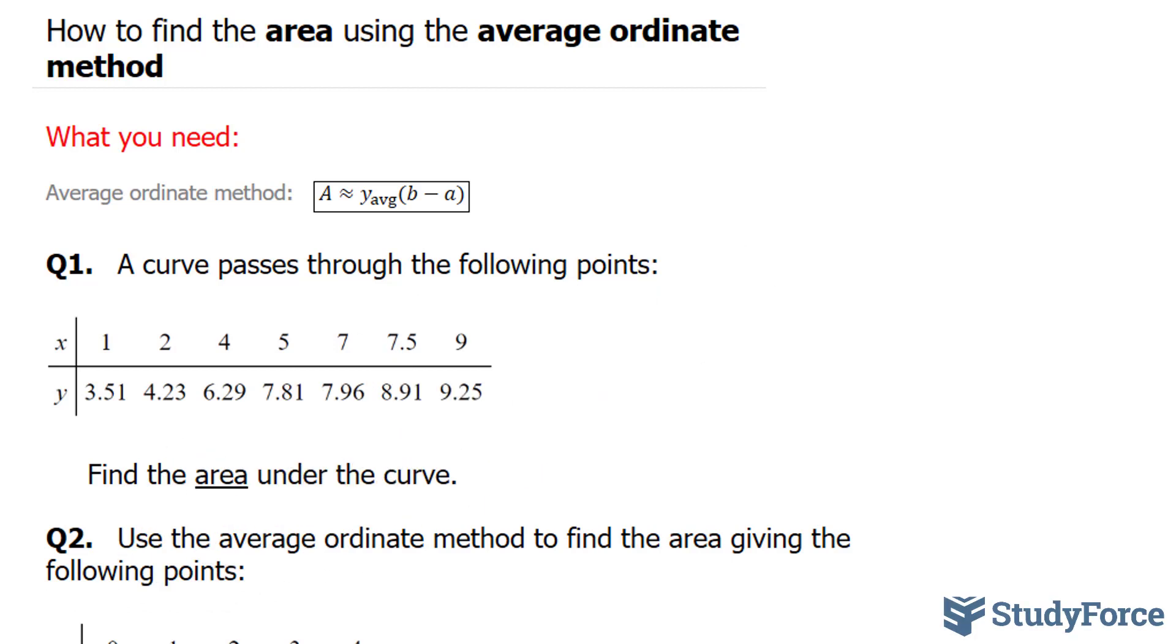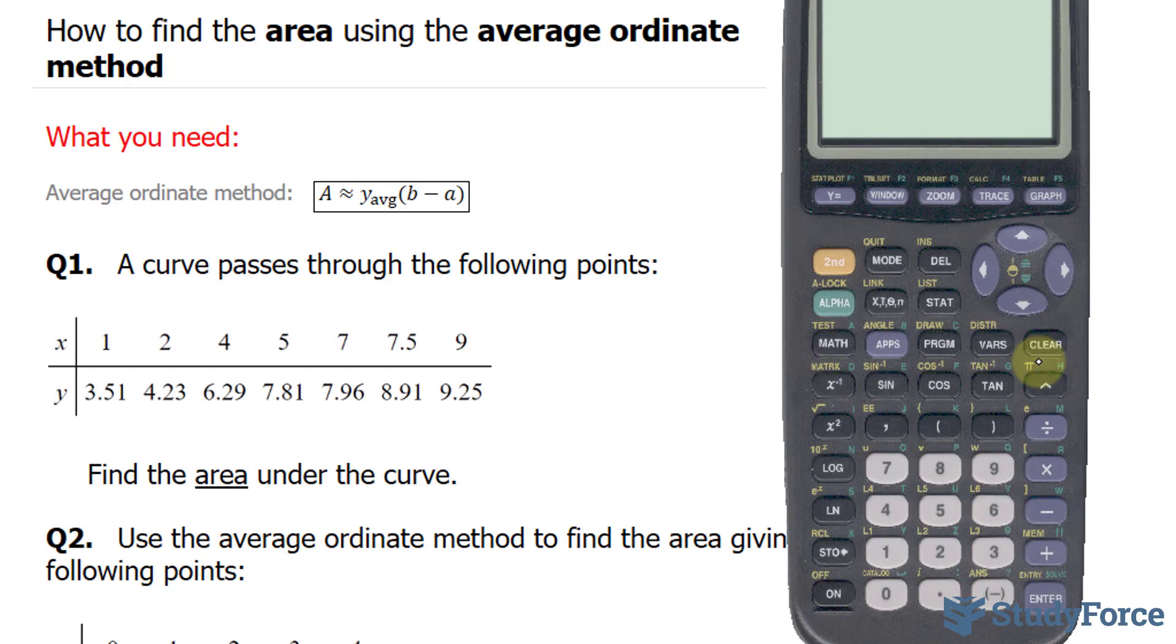I'll turn on my calculator and starting with the first observation, 3.51 plus 4.23 plus 6.29 plus 7.81 plus 7.96 plus 8.91 plus 9.25. Adding those up and then dividing by the number of observations, which is seven. This gives us 6.85.